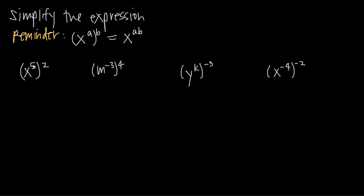Here we've got an applied problem. We have x to the fifth and then raised to the power of 2, so x to the fifth is squared. Power rule just tells us that we can multiply those exponents together. So this becomes x to the 5 times 2. 5 times 2 is 10, so we get an answer of x to the 10. The reason this works is because we're really saying we have x to the fifth squared, meaning we have two factors of x to the fifth.